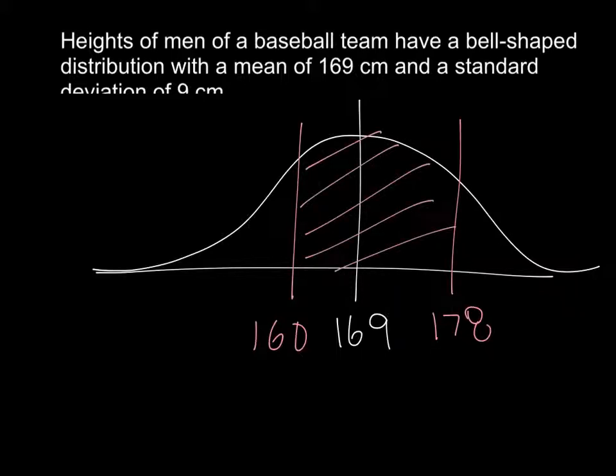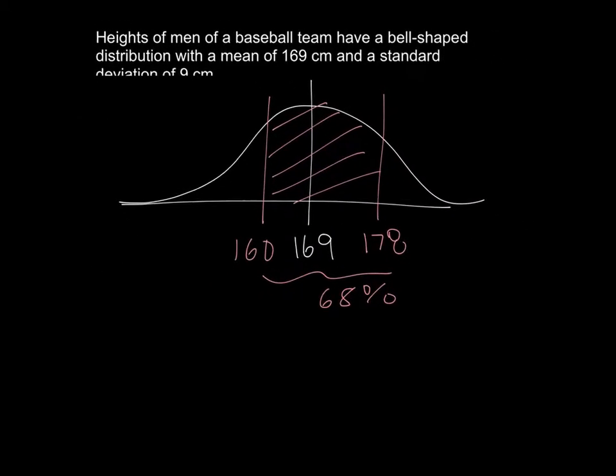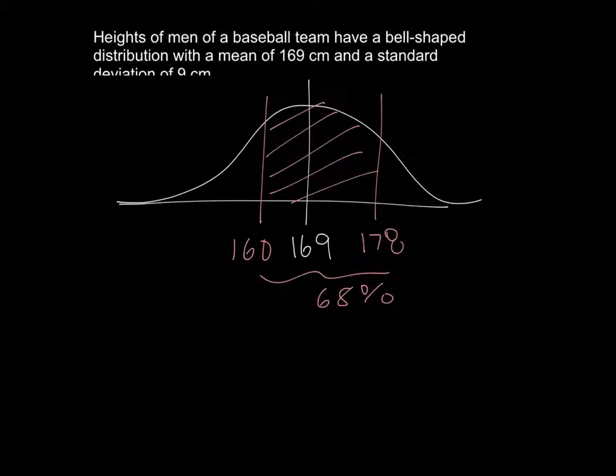And if I look at two standard deviations above and below the mean, I would take 169 plus 2 times our one standard deviation, which is 9, and I'd get 187.